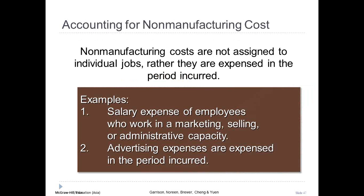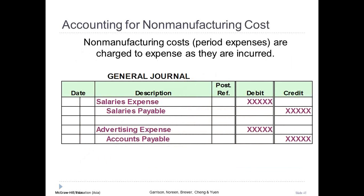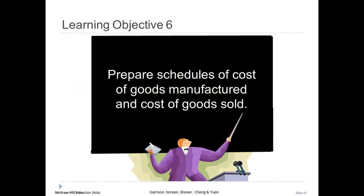The journal entry for applied overhead is: debit work in process, credit manufacturing overhead. Non-manufacturing costs are charged to the respective expense accounts in the period incurred — selling, general, and administrative salaries are expensed in the current period. Learning objective number six: let's prepare schedules of cost of goods manufactured and cost of goods sold.